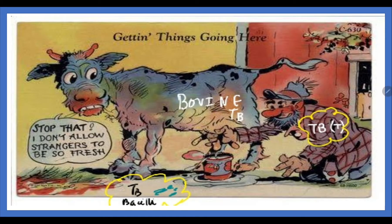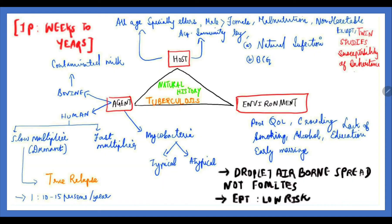Coming to the National Institute of Disease, it holds good for every disease — agent, host, and environmental factors. This also holds good for tuberculosis. The agent is Mycobacteria, which is an intracellular parasite. Coming to bovine and human agents, bovine excretes the bacilli in milk, so we can pasteurize the milk to get rid of it.